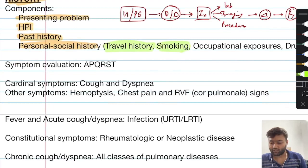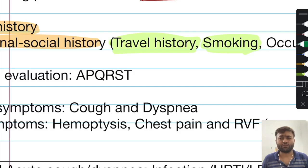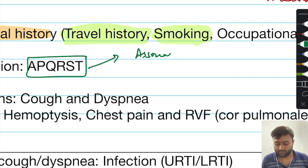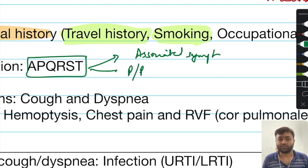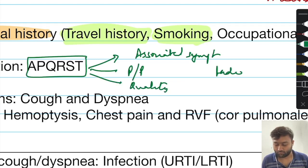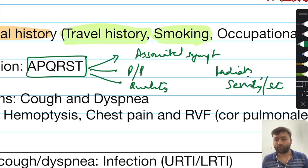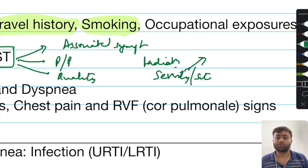Any symptom undergoes thorough evaluation under the principles of APQRST. This stands for: associated symptoms, provocative and palliative features (what aggravates or reduces the severity), quality, radiation, severity, and the site of the symptom. Severity is assessed by the functional limitation imposed by that symptom — for example, if a patient was initially able to jog 100 meters but now can only do 50 meters, the effect on functional status is the true assessment of disease severity.